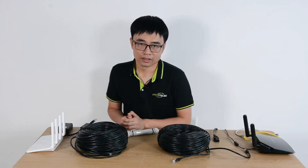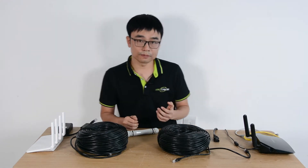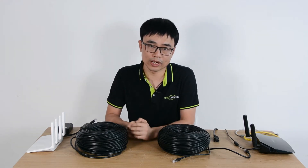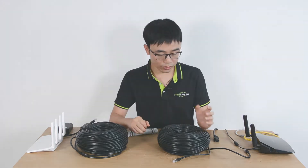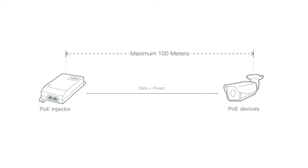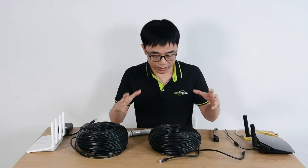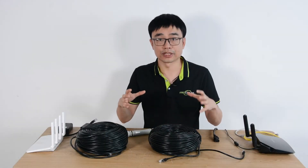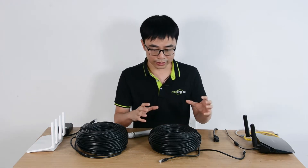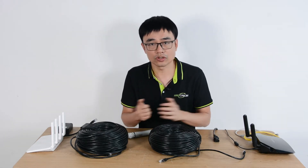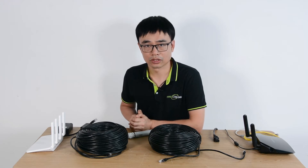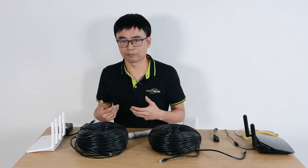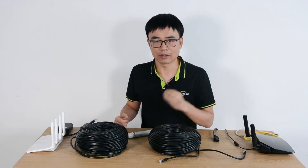Hi. As we know, the IP network is limited to 100m, which means we can only use a 100m Ethernet cable to connect a router to our IP device. So if the distance is beyond 100m and we're still using a cable such as a 200m Ethernet cable, it's not going to work. So we need some kind of extender to repeat the network.